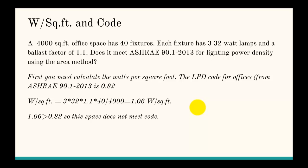We calculate watts per square foot by taking the number of lamps per fixture times the wattage times the ballast factor. So 3 times 32 times 1.1 is the power usage in watts for one fixture. Then we multiply by 40 fixtures and divide by 4,000 square feet to get 1.06 watts per square foot.